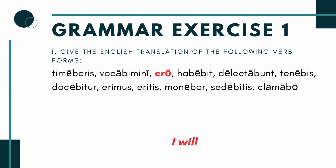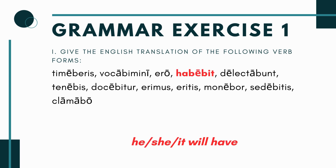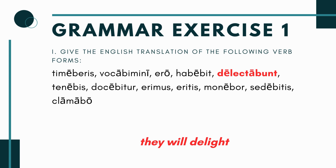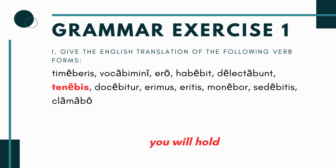Next we have 'ero' — this is a future tense form of the verb 'to be'; the 'o' ending is active voice, it just means 'I will be.' The next verb is 'habebit' — again the 'bi' gives it away as future tense, the 't' is an active voice ending, third person singular, this just means 'he, she, or it will have.' Next we have 'delectabunt' — the 'bu' makes it future and 't' is an active voice ending, third person plural. It just means 'they will delight.'